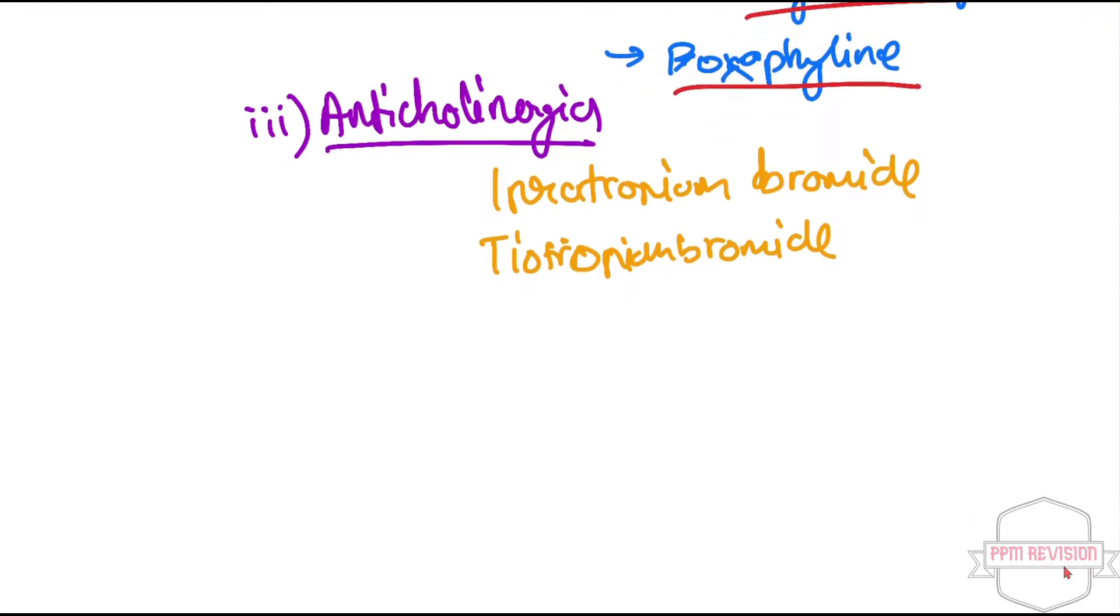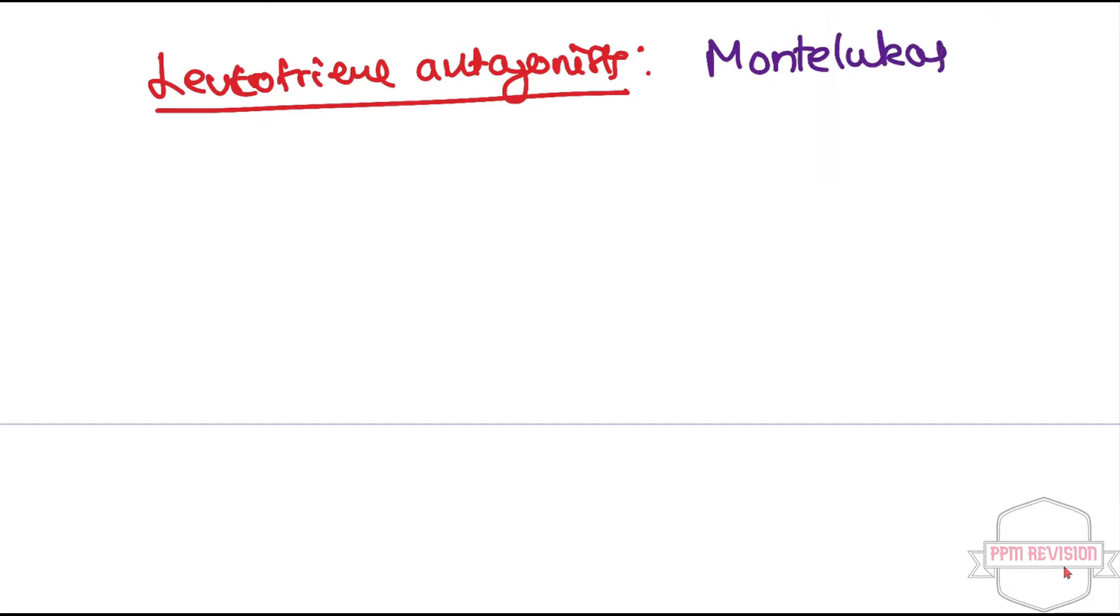Now moving ahead to another class. Under the broad heading leukotriene antagonist, there is montelukast and zafirlukast.